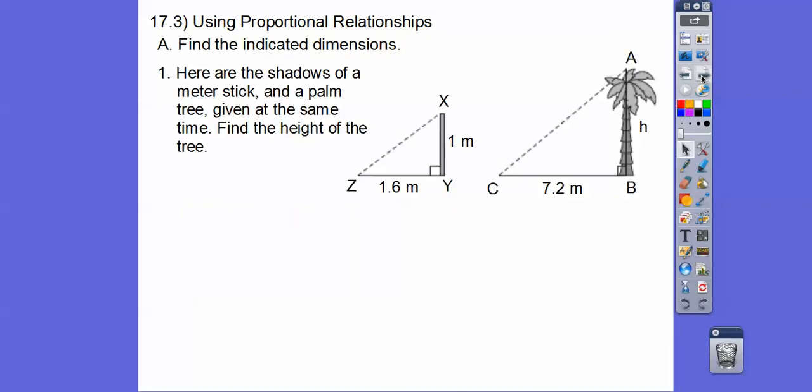So find the indicated dimensions. Here are the shadows of a meter stick and a palm tree given at the same time. Find the height of the tree. Okay, so we're assuming this tree stands straight up, so that's a right angle. And we're assuming that this is a right angle, that we're standing this meter stick up.